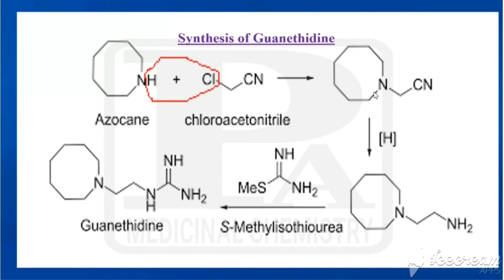We then proceed to hydrogenation or reduction. Four hydrogens are added: two hydrogens combine with the carbon of the CN group, and two combine with the nitrogen, converting the nitrile. This gives us a CH2-CH2-NH2 side chain — the CN is reduced to CH2-NH2, with two hydrogens added to the carbon and two to the nitrogen.